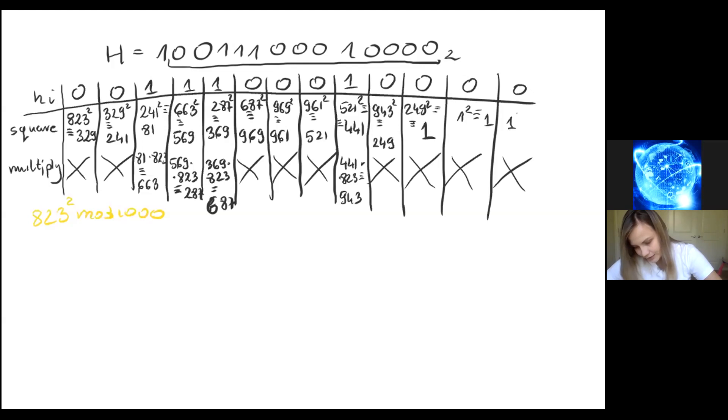And 249 squared, this is congruent to 1. So here we have 1 squared, of course this is 1, and 1 squared of course it's 1. So we see Windows couldn't compute it, but we can compute it. So 823 to power 10,000, everything modulo 1,000, that gives us 1. Thank you very much for watching and see you in other videos.